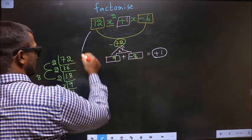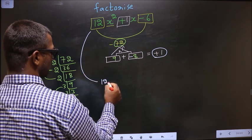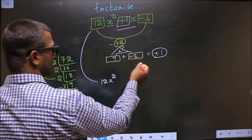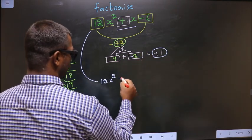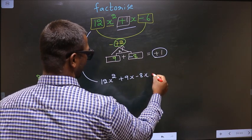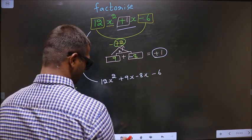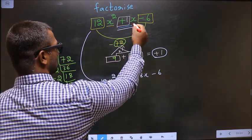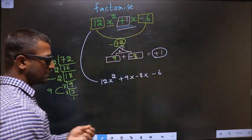Now you change this. So 12x², in place of +1x, now you write +9x - 8x - 6. Did you understand? In place of +1x I have written this.